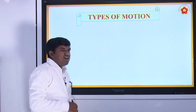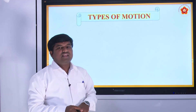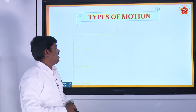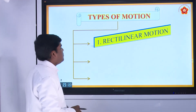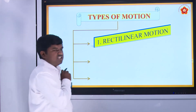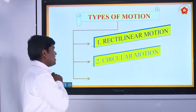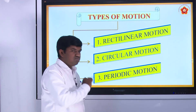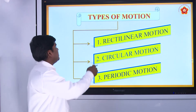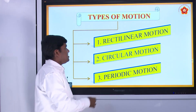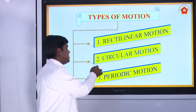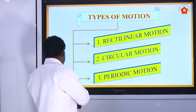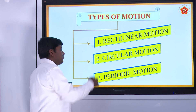Next, types of motion. There are three types of motion. First one: rectilinear motion. Second one: circular motion. Third one: periodic motion. There are three types of motion — rectilinear motion, circular motion, and periodic motion. We can go one by one.